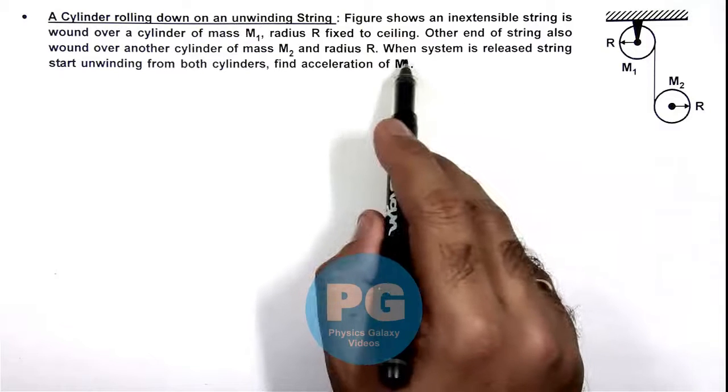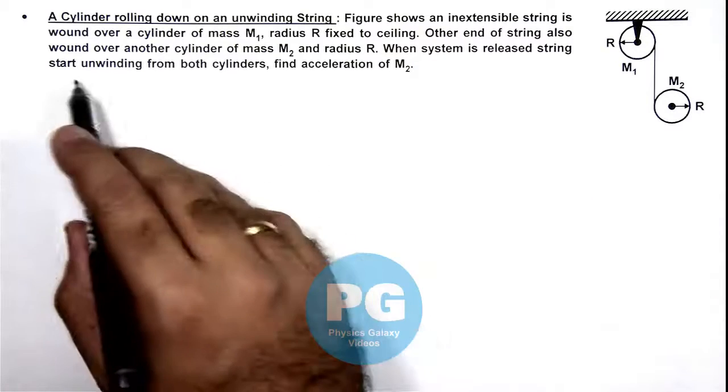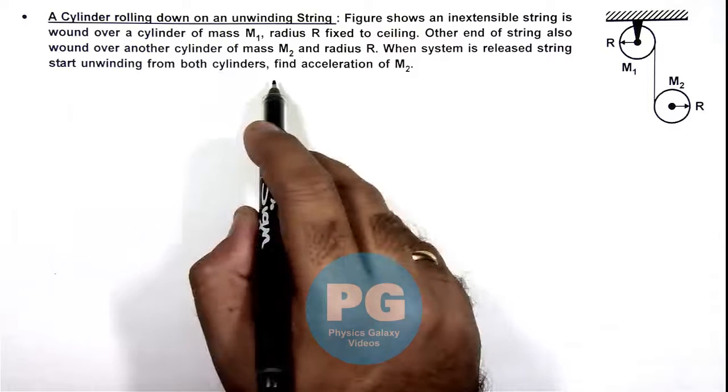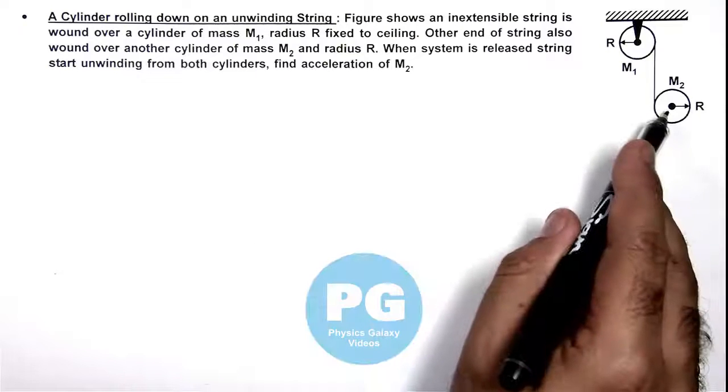When the system is released, the string starts unwinding from both cylinders. We are required to find the acceleration of m2.